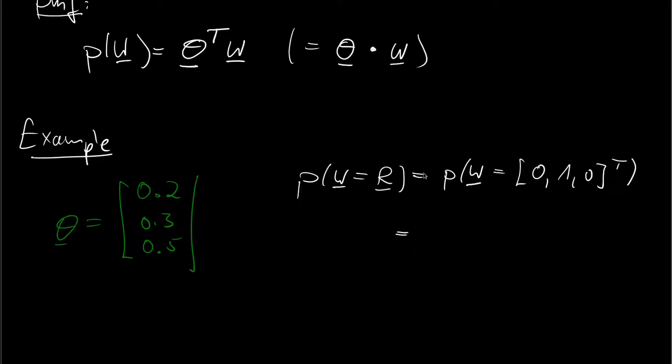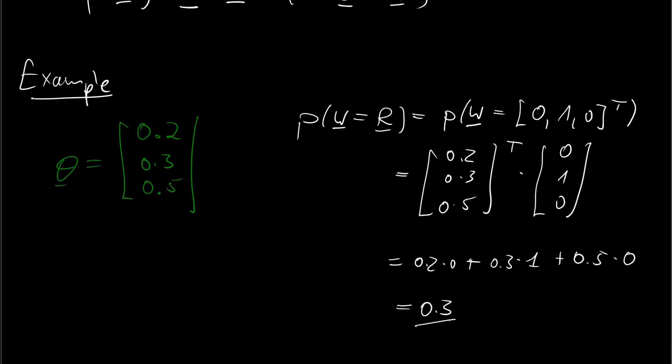And then we do the scalar product. So we do 0.2, 0.3, and 0.5 in the vector transpose times and here 0, 1, 0. And this would be 0.2 times 0 plus 0.3 times 1 plus 0.5 times 0. And of course we are left with 0.3, the probability of rainy weather.